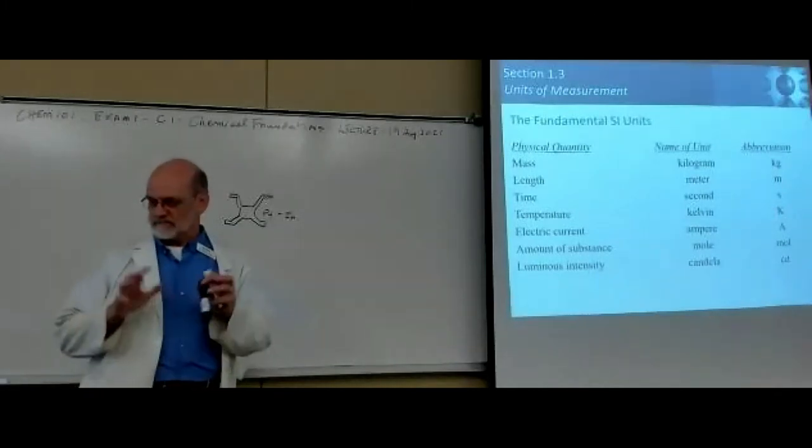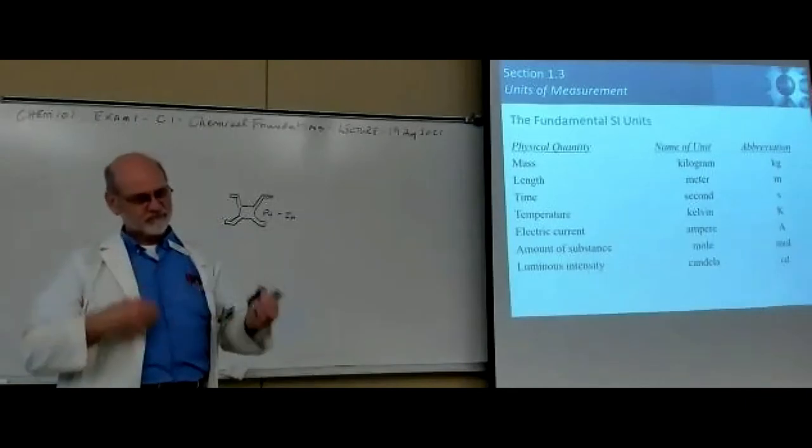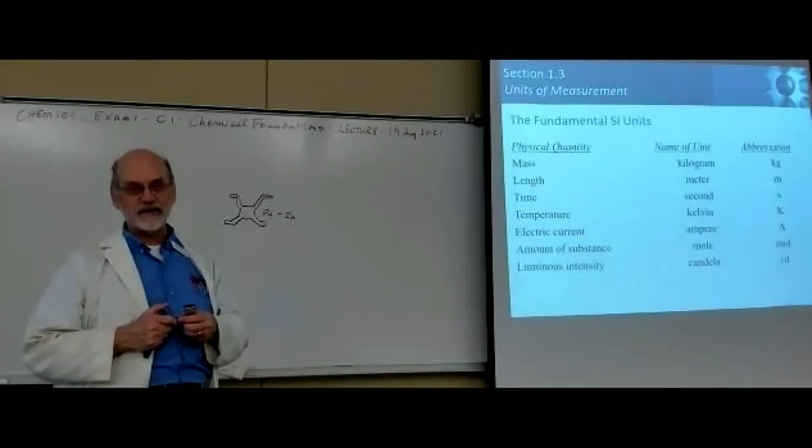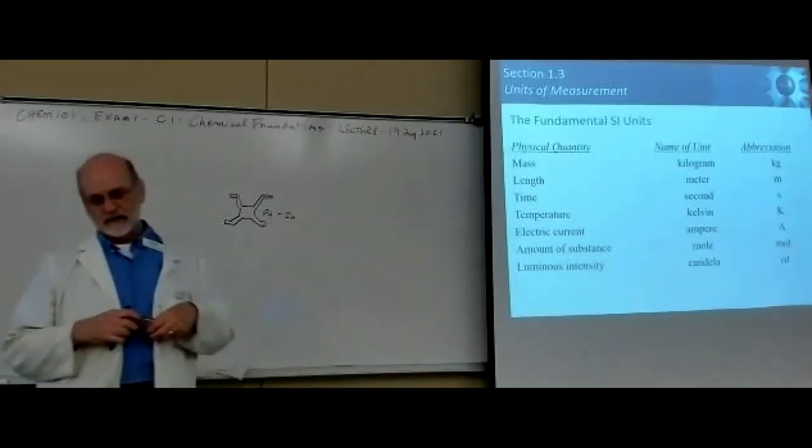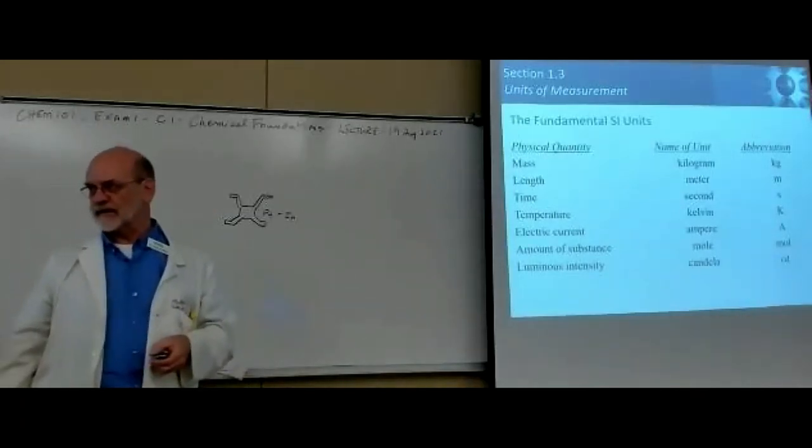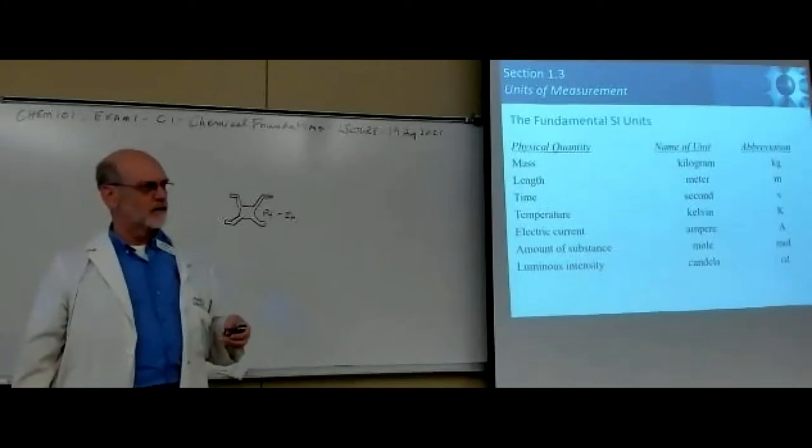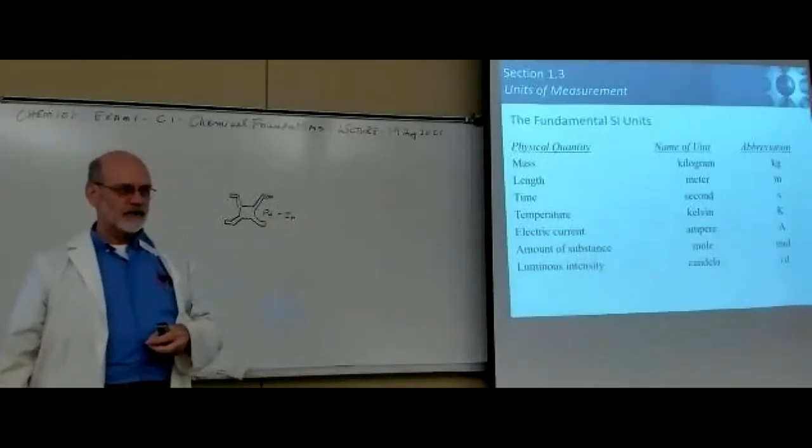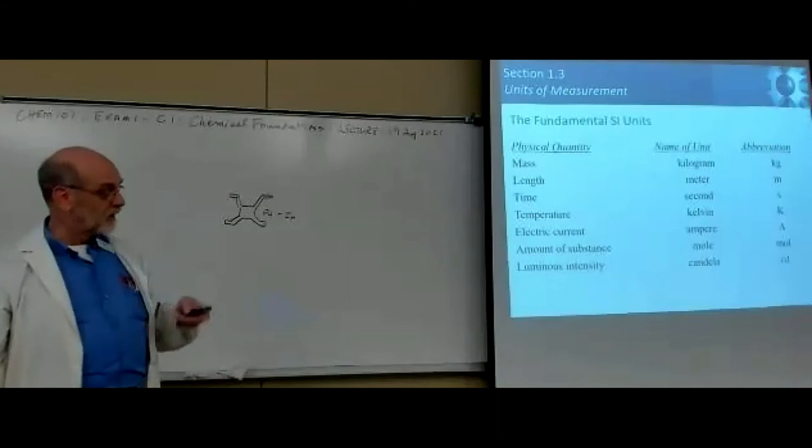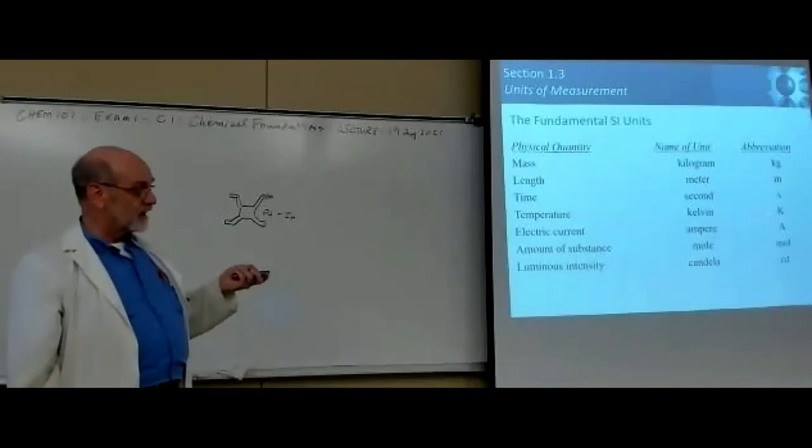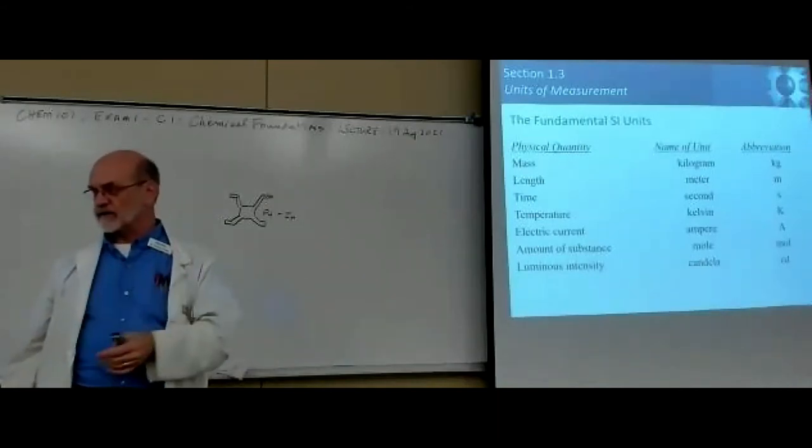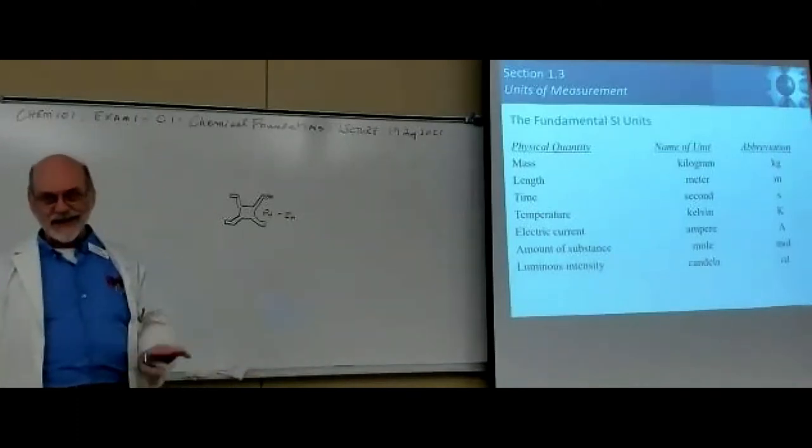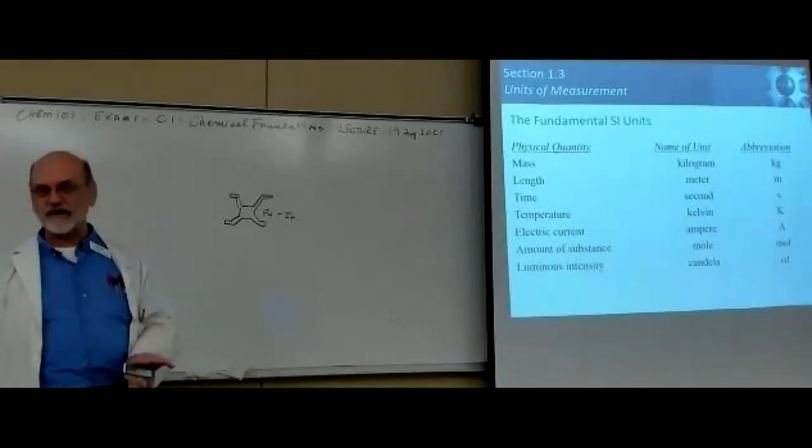The zero point for Celsius is the freezing point of pure water, zero degrees. So that means you can have positive values and negative values of Celsius. And for some calculations that is going to wreak havoc. You can't use negative numbers in some calculations. So in comes Lord Kelvin.